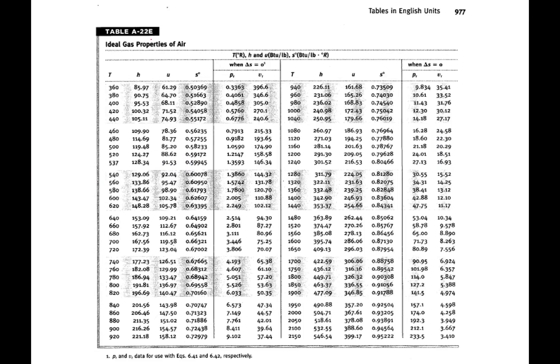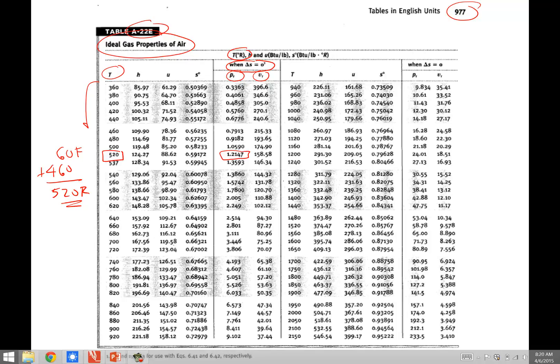Here's the ideal gas properties of air, table A22E. Everything in this table is a function of temperature. Temperature is in Rankine, so we take our 60 Fahrenheit and add 460 to get 520 Rankine. That's our beginning state. In these two columns when delta S equals 0, that means isentropic, we have P sub R and V sub R. The P sub R value at our initial state is 1.2147.